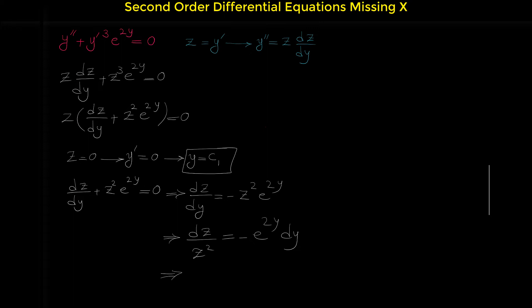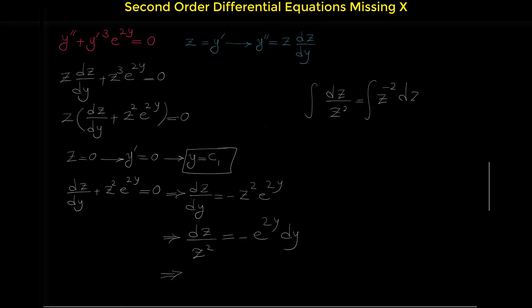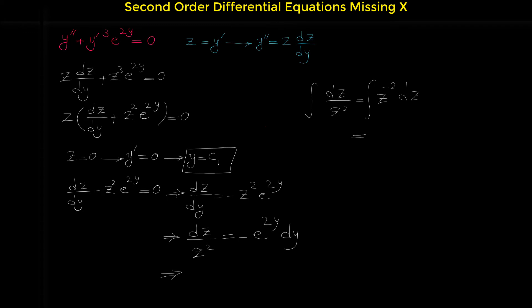The integral of dz over z squared equals the integral of z to the negative 2 dz. We bring z squared to the numerator and make it z to the negative 2. This integral equals z to the negative 1 over negative 1, which we can write as negative 1 over z. So the integral of the left side is negative 1 over z.